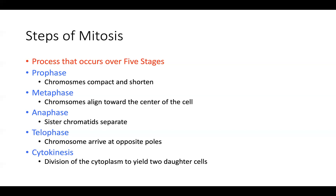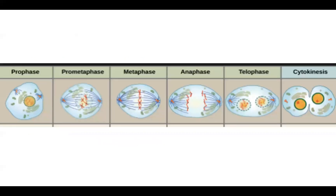During telophase, sister chromatids migrate towards opposite ends of the cell. The cell takes on an elongated shape, and at each end you have two distinct sets of chromosomes. You start to see nuclear envelopes forming around these two new sets of chromosomes, indicating we're ready for cytoplasmic division — cytokinesis. Once telophase is complete, we've got chromosomes in two distinct sets on opposite poles, and the cell is ready for cytokinesis.